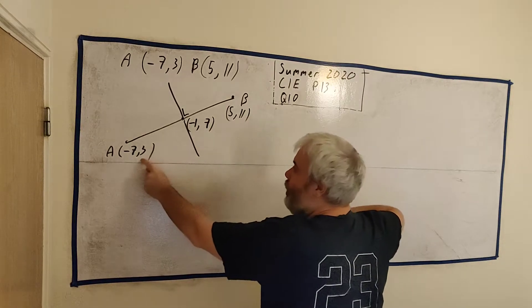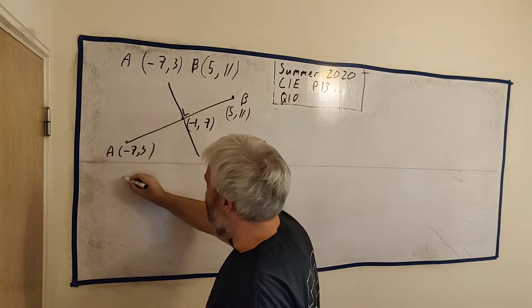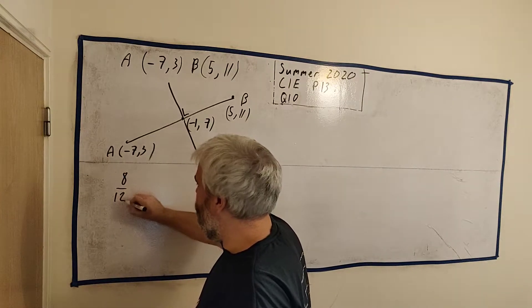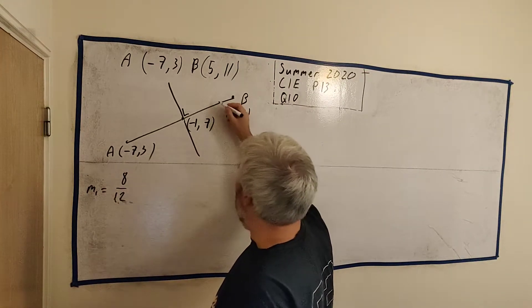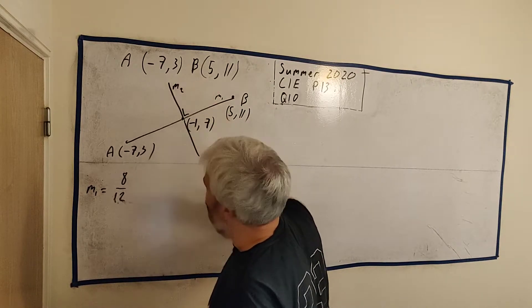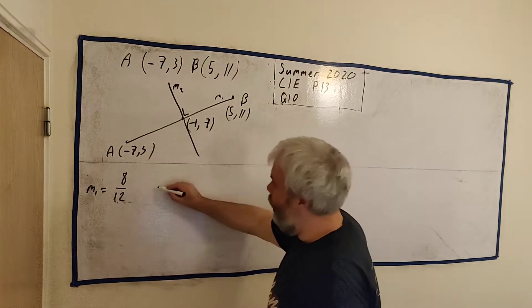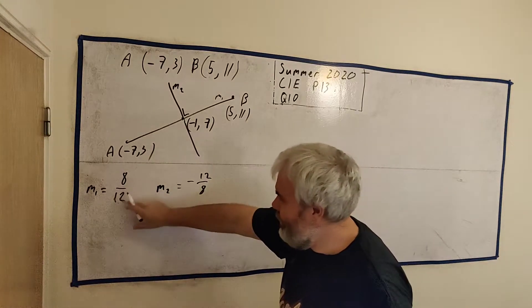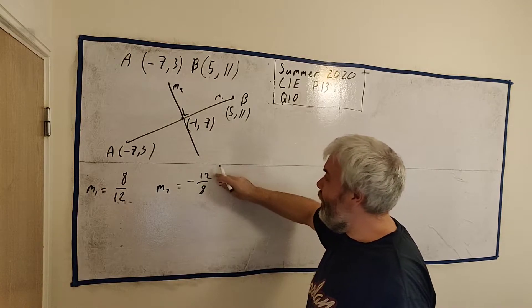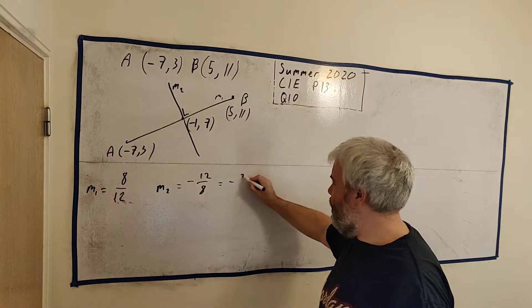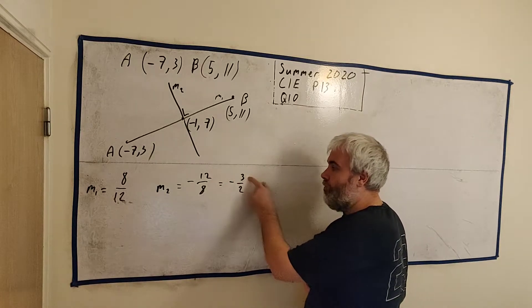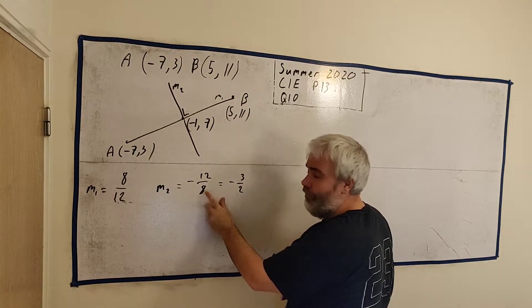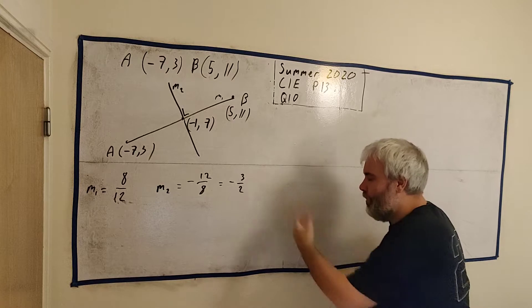So let's find the slope of these two points. We get y2 minus y1. So we go 11 minus 3 is 8. 5 minus minus 7 is plus 12. This is the slope M1. So therefore, M2 is equal to minus 12 over 8. We can change this down. Divide both of them by 4. Minus 3 over 2.